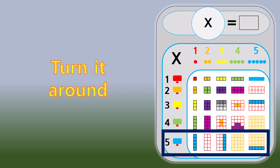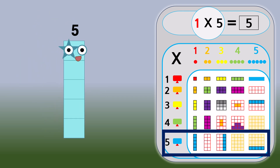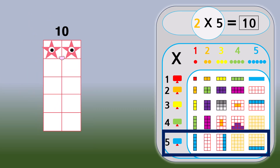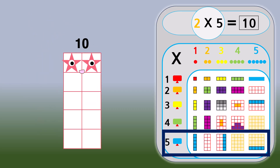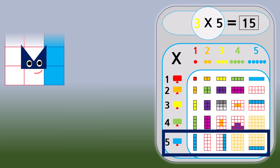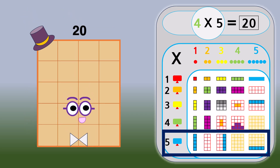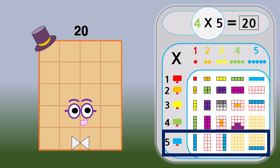Turn it around. 1 times 5 equals 5. 2 times 5 equals 10. 3 times 5 equals 15. 4 times 5 equals 20. 5 times 5 equals 25.